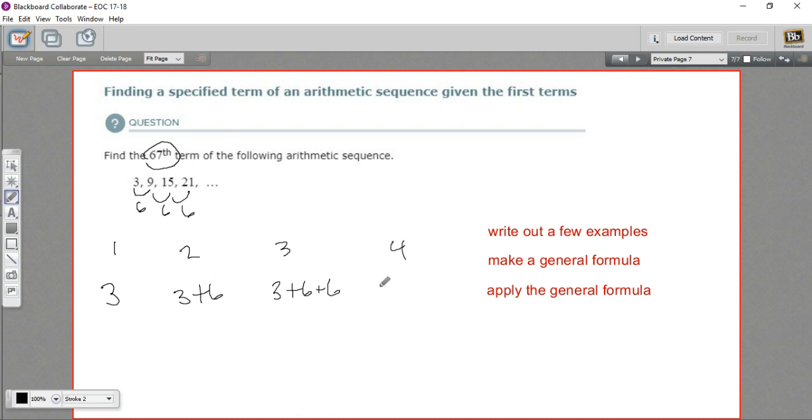And likewise, the fourth term, 3 plus 6 plus 6 plus 6. Now, one part of this stays the same. The 3 always stays the same. This part changes. We're adding another 6 every time. So I'm going to rewrite this and I'm going to make it simpler by using multiplication instead of adding. So when you add three 6s together, it's the same as 6 times 3. So this is really 3 plus 6 times 3.